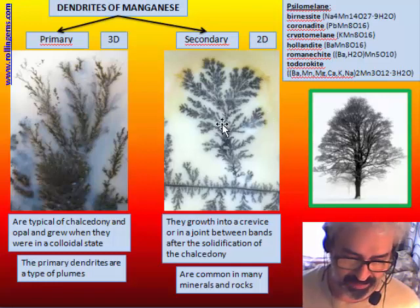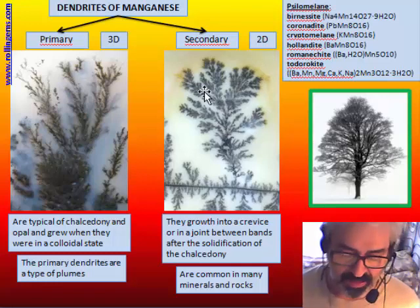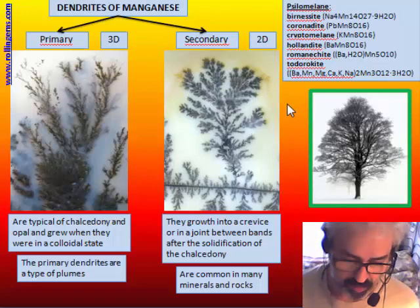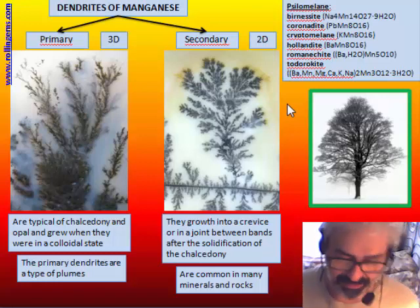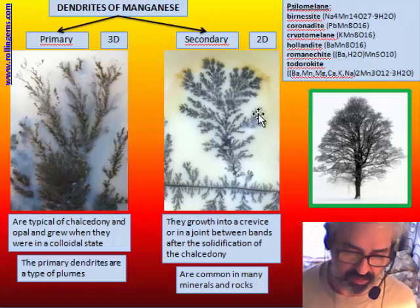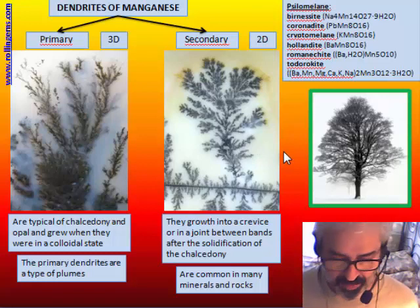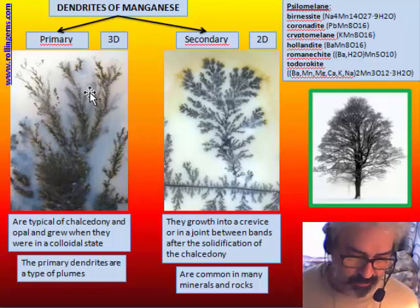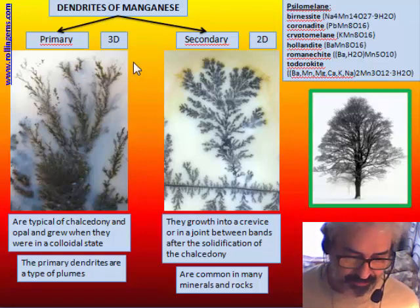Secondary dendrites are the more common kind, and are very common in many rocks and many other minerals. Basically, any kind of crystal or rock can have some dendrites in a small fracture or in a small plane inside the crystal or inside the rock. The three-dimensional primary dendrites grow in a colloidal jelly solution.